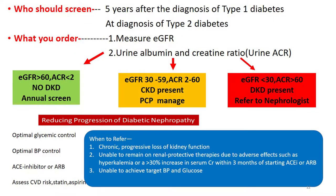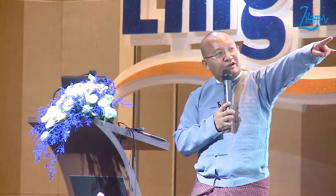Who should be screened? Type 1 diabetes: after five years of diagnosis. Type 2 diabetes: at the time of diagnosis. What to order: GFR, urine creatinine ratio (UCR/ACR). If GFR is less than 30 or ACR is more than 60, refer to the nephrologist.